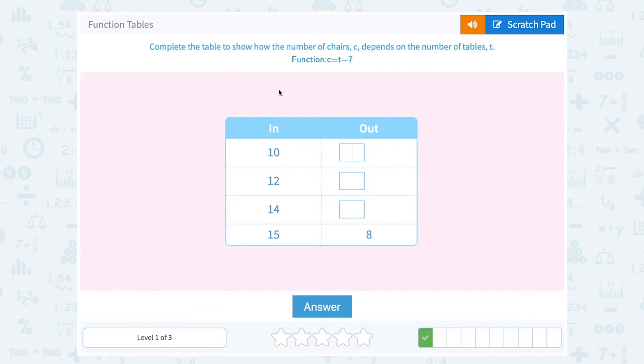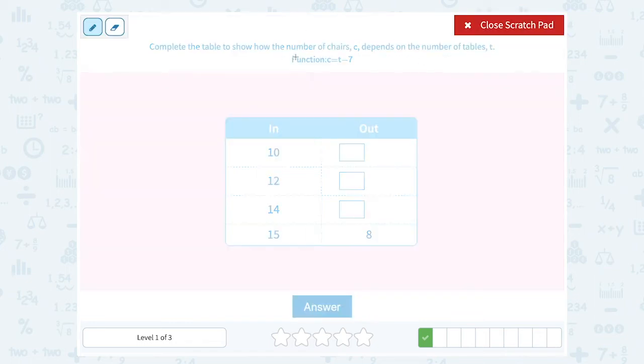Complete the table to show how the number of chairs c depends on the number of tables t. This time our function is c equals t minus 7. So just like before, we know the output is the answer we get. So c has to be our output, because it's our answer when we subtract 7 from t. So t would be the input number, and c would have to be the output number. That's our answer.